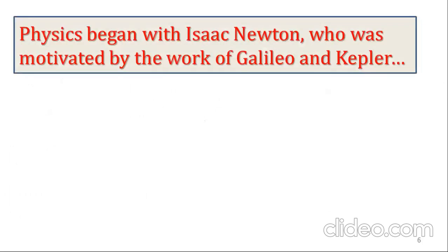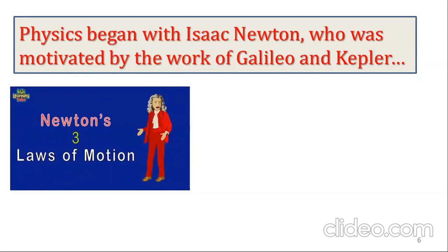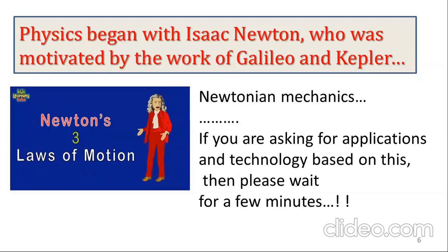Physics began with Isaac Newton. In the year 1642, Galileo passed away and Isaac Newton was born. Newton was motivated by the work of Galileo on one side and Kepler on the other. Newton's three laws of motion — the first law of inertia, the second law F=ma, the third law of action and reaction — gave rise to what is known as Newtonian mechanics, the beginning of classical mechanics. Mechanics is the study of the laws of motion, forces, interaction, acceleration, and deceleration.